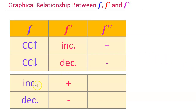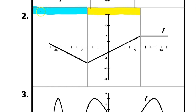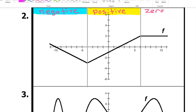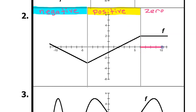Remember, wherever function f is increasing, f prime will be positive. Where it's decreasing, f prime will be negative. So f prime will be negative in the decreasing interval and positive in the increasing interval. In the last interval, f prime is the slope, and for a horizontal line like this the slope is 0. So f prime is going to be 0 for this entire interval — we can draw a horizontal line at 0.